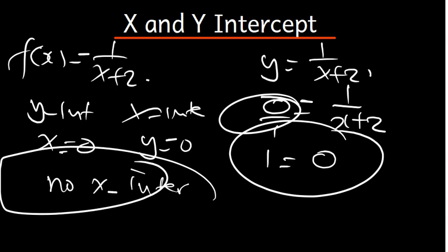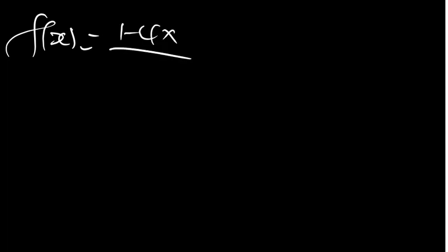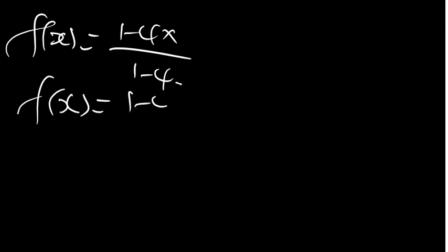Let's have another one. Let's say we have f(x) equal to 1 minus 4x divided by 1 minus 4. Now we know this simplifies straightforwardly — we have 1 minus 4x divided by negative 3.